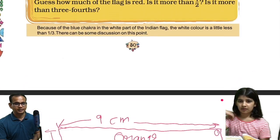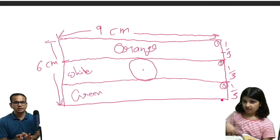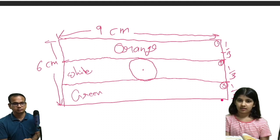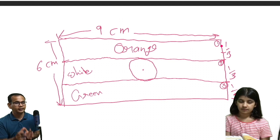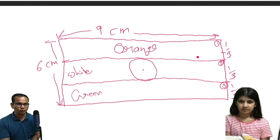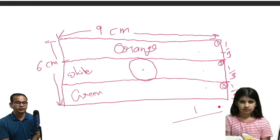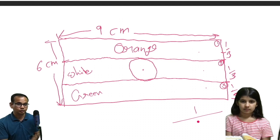Why not one by four? That's a good question, Avisha. Why is it one third and not one fourth? I'll tell you. So this is one piece, and we are dividing it into three equal parts — one, two, and third part. So I can say one piece divided into three equal pieces.